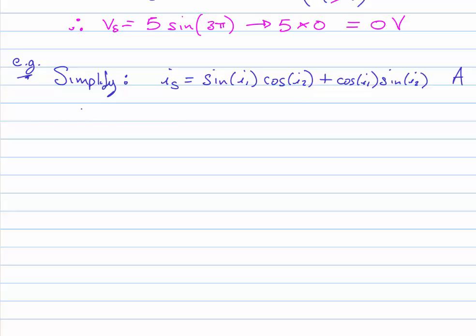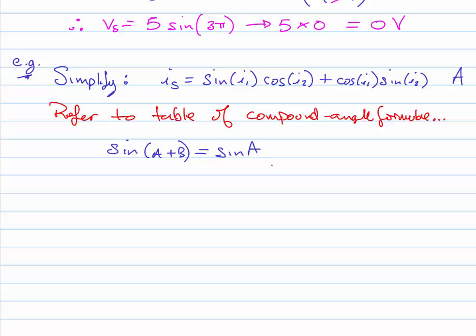And to solve this we just refer to our table of compound angle formulae, not double angle but compound angle formulae. So when we go away and inspect that, what we notice is that the sine of a plus b equals the sine of a cos b plus cos of a times the sine of b.